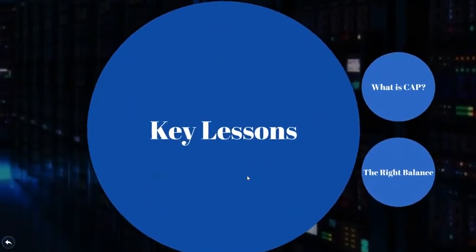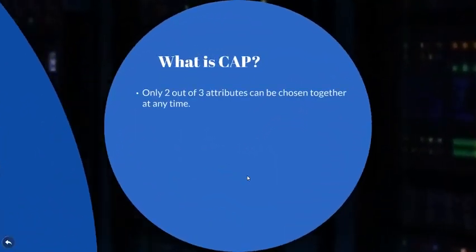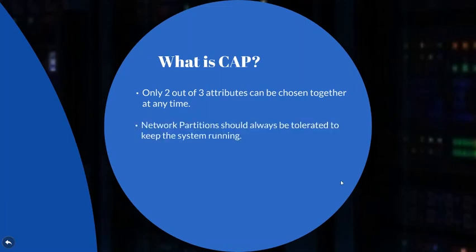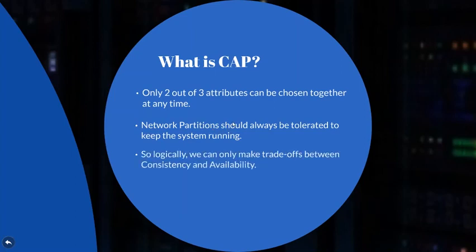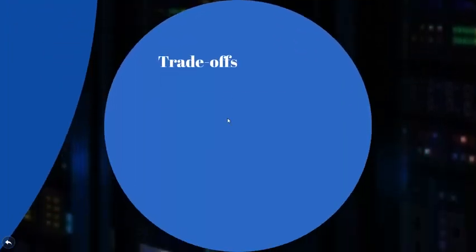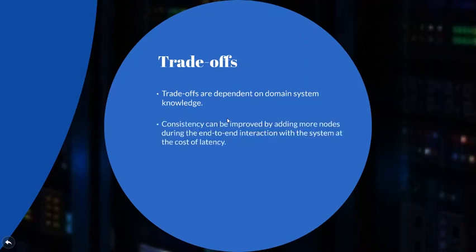CAP stands for consistency, availability, and partition tolerance. Keep in mind that this consistency is different from the consistency in ACID properties for databases. We can only choose two out of three properties when designing a distributed system, and network partition should always be tolerated, which leaves us with the choice between availability or consistency. This choice is heavily based on trade-offs pertaining to the domain knowledge on which the system is built. To increase consistency, the most important approach is to increase the number of nodes in the end-to-end communication to ensure proper locking mechanisms, though this comes at the cost of latency.